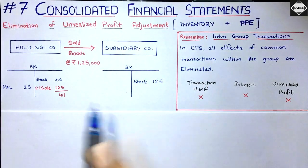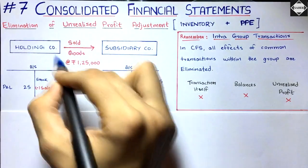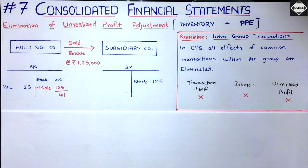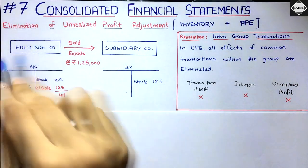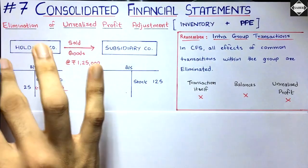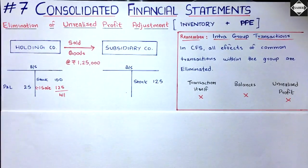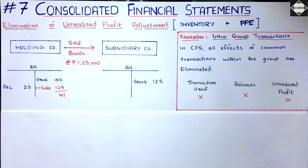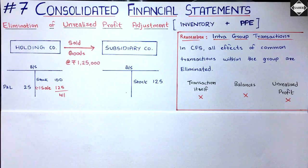This also works the other way: if the subsidiary sold something to the holding company and made a profit, then in their standalone financial statement that profit would be completely realized. The unrealized profit concept arises only in consolidated financial statements, because in consolidated financials the subsidiary and holding company are not third parties — they are one and the same, treated as a group as a whole.